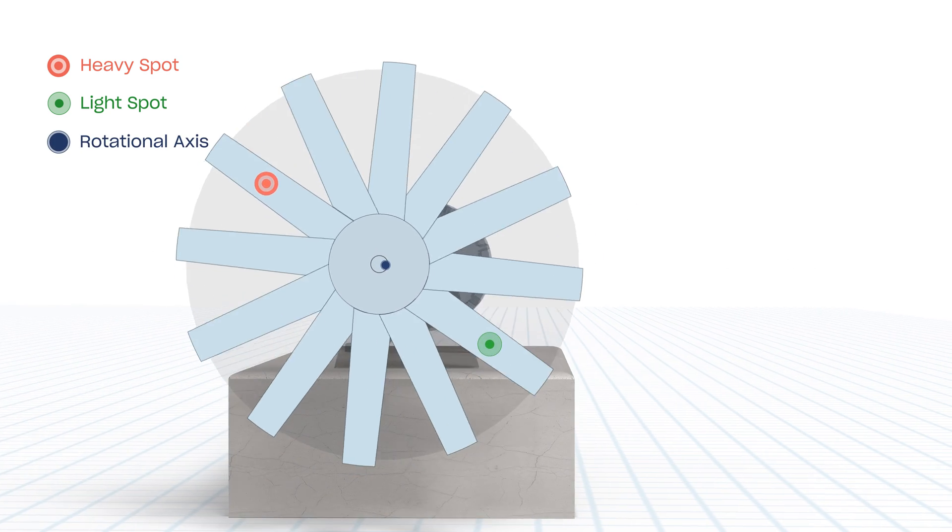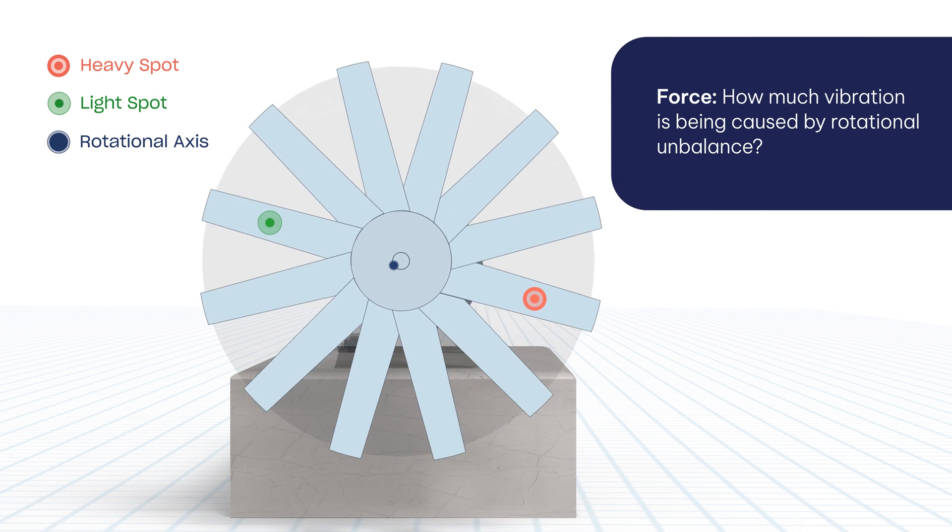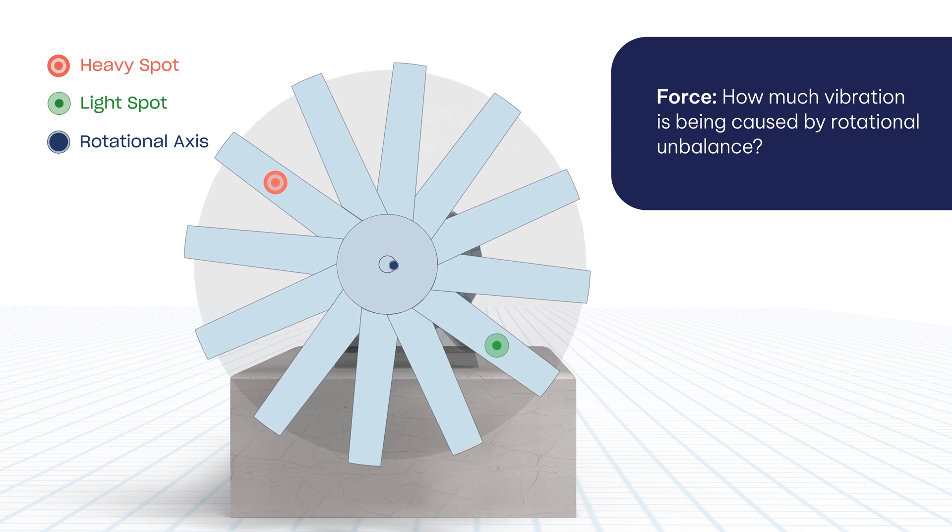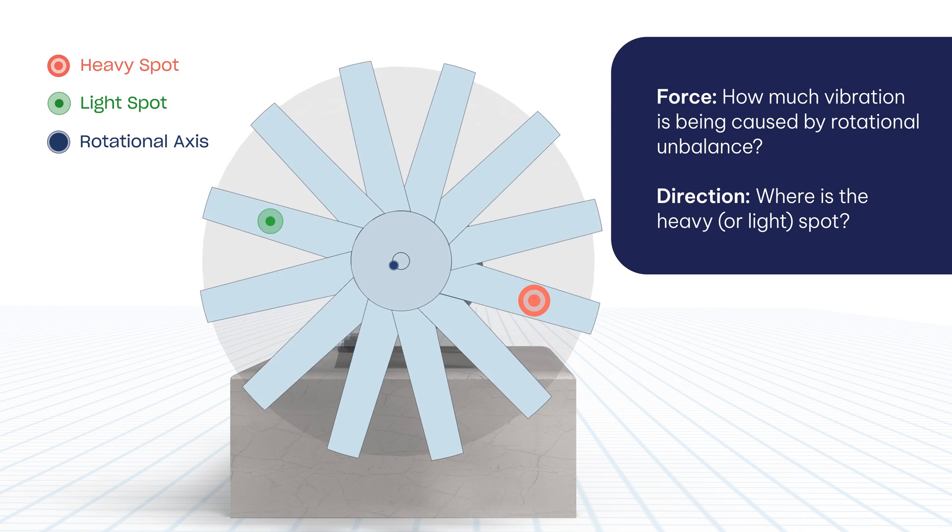In order to correct rotational unbalance you must know two things. One, force which is the amount of vibration caused by rotational unbalance, and two, direction which is the location of the heavy or light spot.